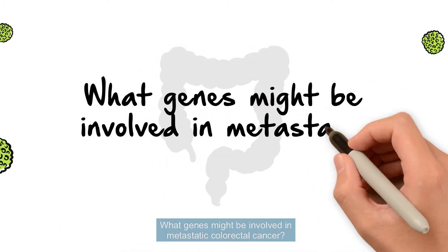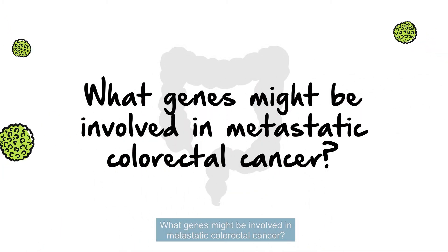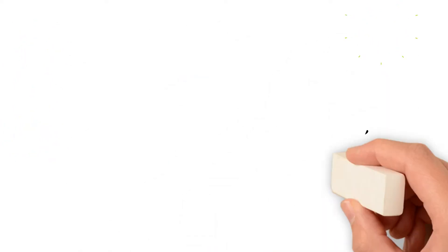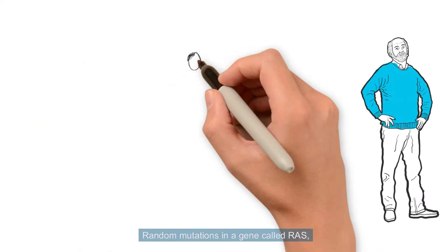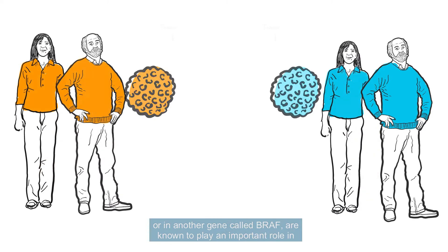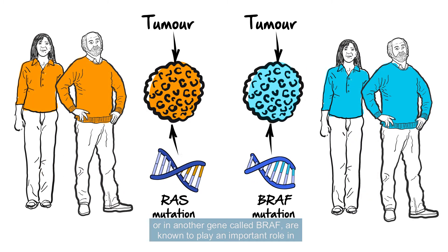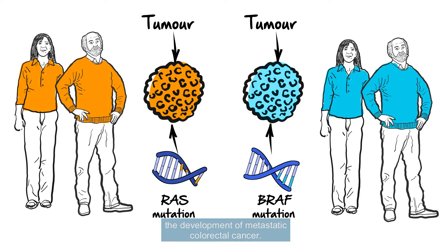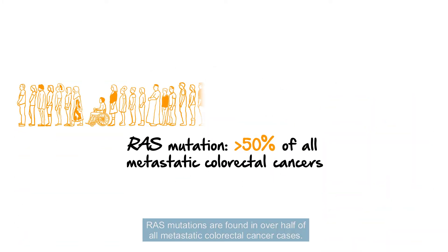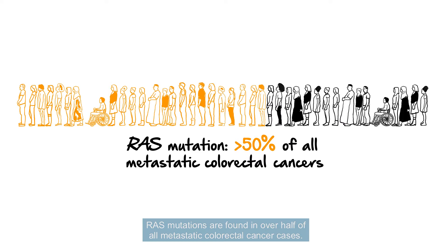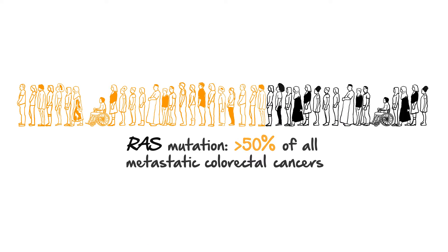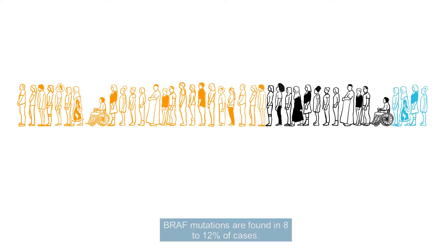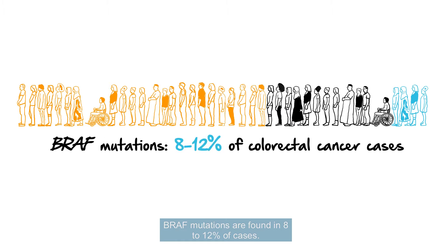What genes might be involved in metastatic colorectal cancer? Random mutations in a gene called RAS, or in another gene called BRAF, are known to play an important role in the development of metastatic colorectal cancer. RAS mutations are found in over half of all metastatic colorectal cancer cases. BRAF mutations are found in 8-12% of cases. It is rare for anyone to have both a RAS and BRAF mutation.